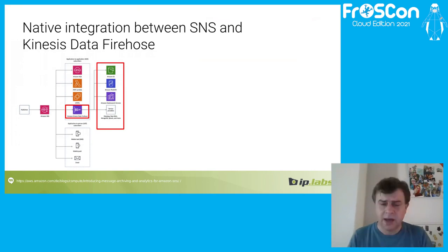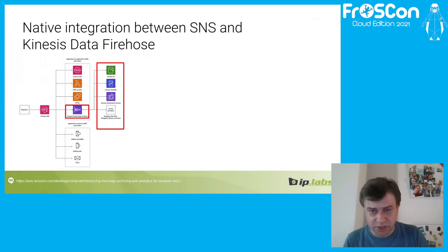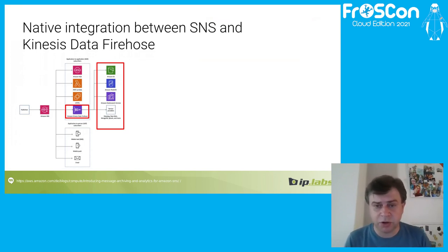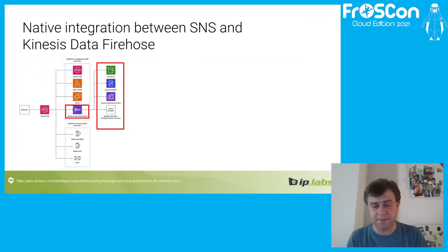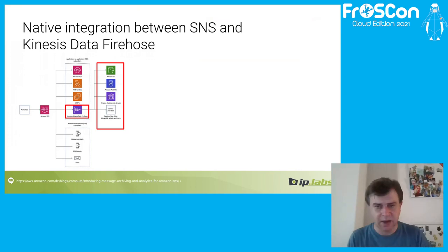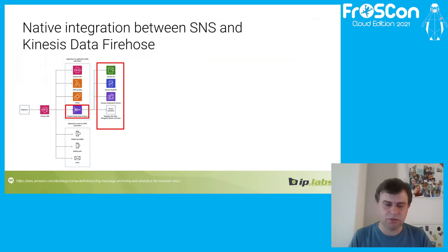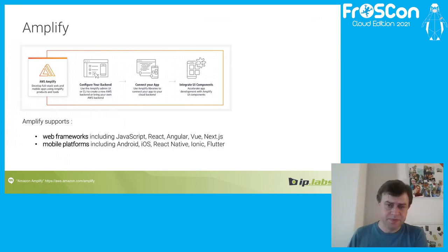Another example is SNS with Kinesis Data Firehose. Firehose itself natively integrates with storage targets like S3, Redshift, and Elasticsearch, enabling analytics use cases with Athena or similar services — all without writing too much business logic code.